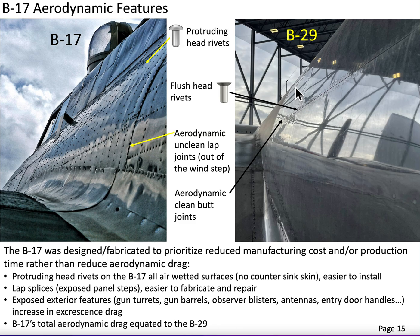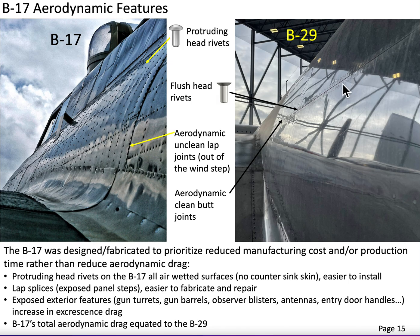On the B-29, there is an additional circumferential splice with the same configuration. This splice connects to a frame underneath, and also has a stringer or longeron underneath to help provide a load path transfer from the upper panel to the lower panel. This is called a butt splice — the panels butt together using a single row of countersink rivets. Any gap between the two panels is filled in with an aerodynamic sealant.